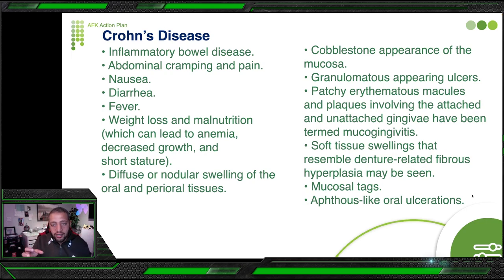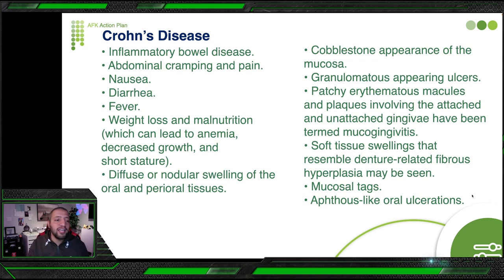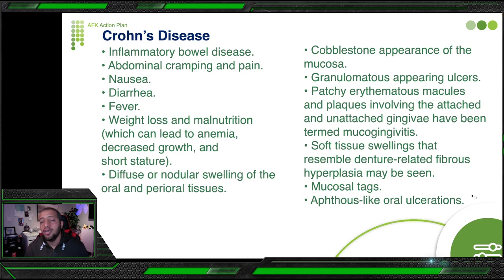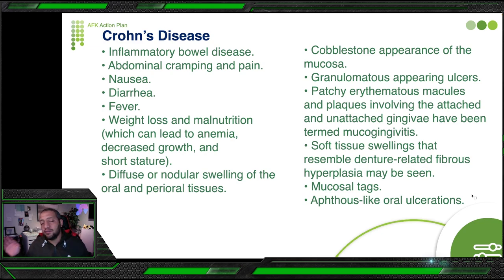Key oral findings in Crohn's disease include: cobblestone appearance of the mucosa, granulomatous inflammation, mucogingivitis, soft tissue swelling resembling denture-related fibrous hyperplasia, and oral ulceration. When a patient has diarrhea, nausea, and oral ulcers with anemia, you can correlate this to Crohn's disease. In the exam, the question will not give you all symptoms — it picks some and you must conclude. Do not assume; take the question at face value and decipher the information given.